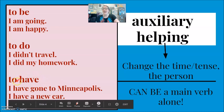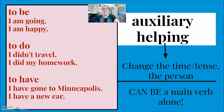We can see the same thing with have. I have gone to Minneapolis. Here have is the helping verb. Together with gone, to show the time, the tense. This is present perfect tense. We could change the person. We could change he has gone. And again, this can be a main verb alone. I have a new car. I have a fever. Only have is the main verb in this sentence.